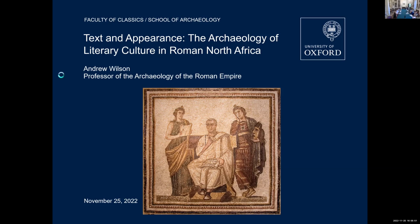What I show you here is the famous so-called Virgil mosaic from modern Sousse, ancient Hadrumetum, a port city in Tunisia. Here we see the poet seated, flanked by the Muses Clio and Melpomene, who are the Muses invoked in the opening lines of the Aeneid, the text of which is on the scroll in his hand.